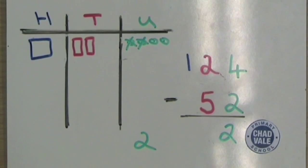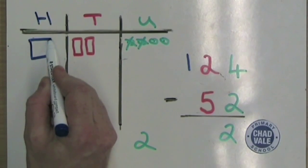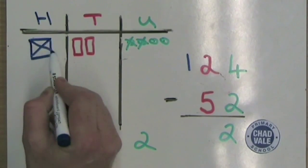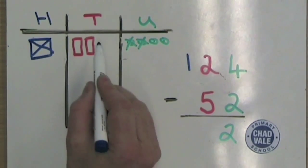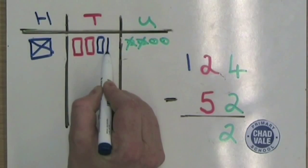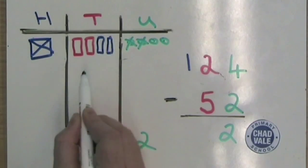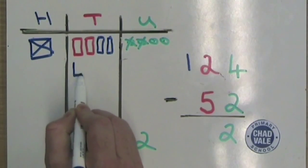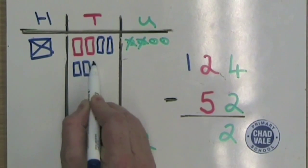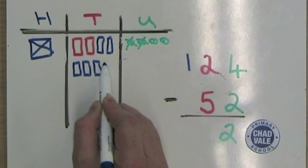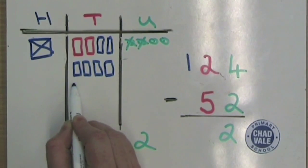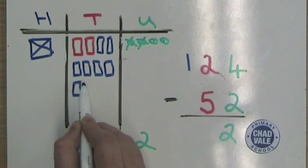Next we think: two towers of 10 subtract five towers of 10. We can't do this, so we cross out the 100 and draw 10 towers of 10. Remember that 10 units go together to make one tower of 10, and 10 towers of 10 go together to make 100.